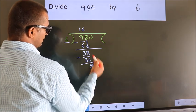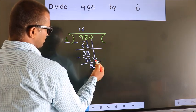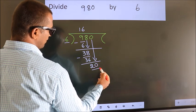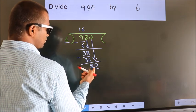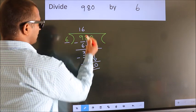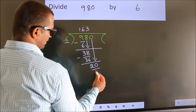After this, bring down the beside number. So, 0 down. So, 20. A number close to 20 in the 6 table is 6 times 3, which is 18.